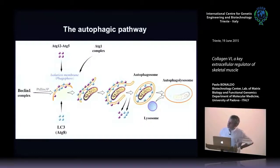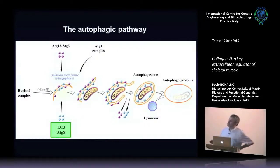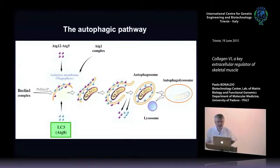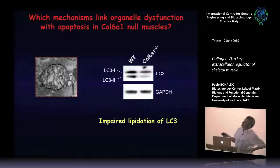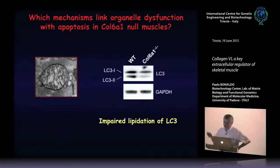Among these proteins, LC3 is a useful marker for autophagy. In its inactive form it is cytosolic; once autophagy is induced it becomes lipidated — attached to a lipid — which slightly changes its properties and migration in gel. In this western blot with anti-LC3 antibody you have the upper band (inactive form) and lower band (lipidated form). In wild-type mouse the ratio between the two bands is similar, but in the knockout the active lipidated form is much less — suggesting impaired lipidation of LC3 and defective autophagy.